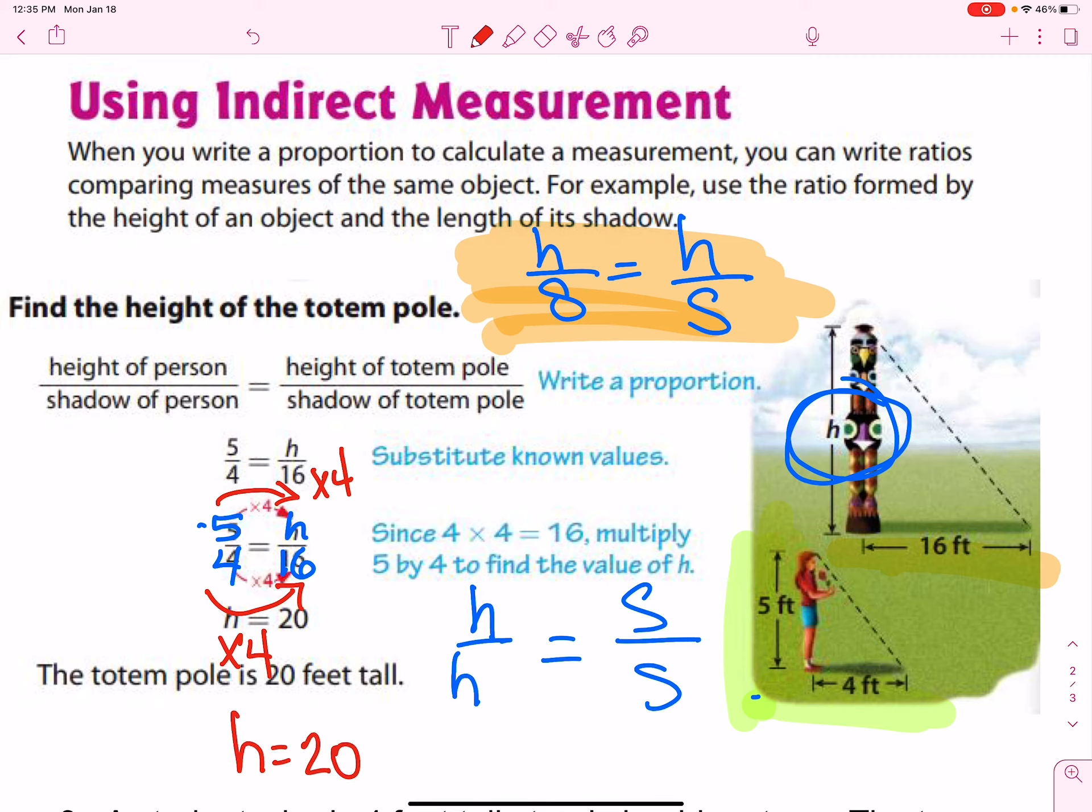You would only use this format if you can eyeball and see really quickly what that scale factor is going to be. If it is not a quick recognition, then you're going to want to go ahead and do your cross products.